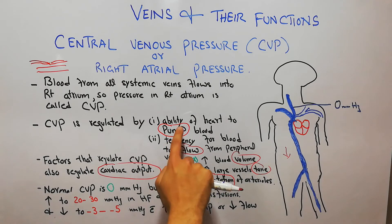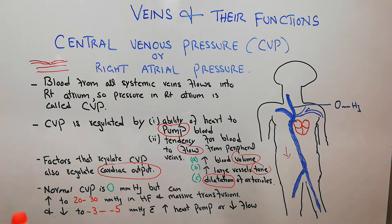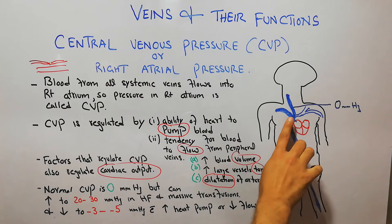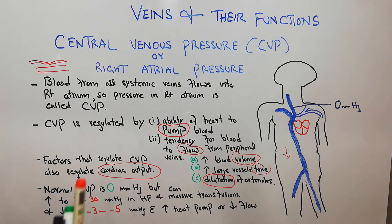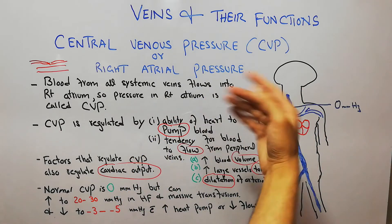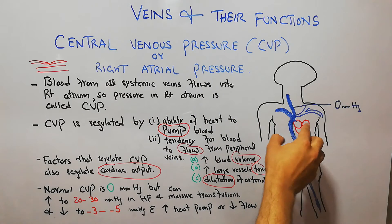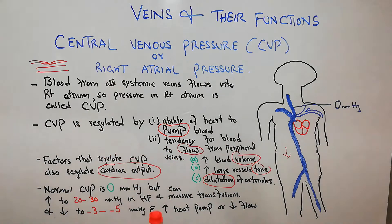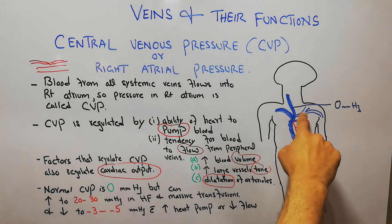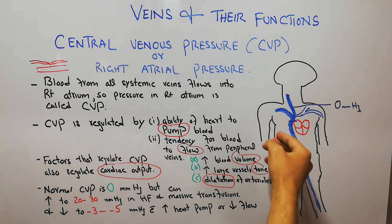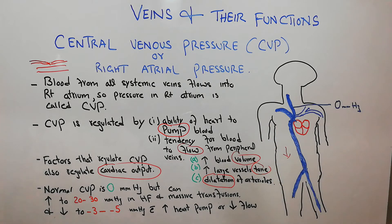If the pumping mechanism of the heart fails, blood will keep coming but the heart will not be able to pump it, so the CVP will increase. If the heart is pumping very strongly, the CVP is going to fall because more blood will be going out of the heart, creating a tendency for blood to come in. Factors affecting the central venous pressure will also affect the cardiac output.